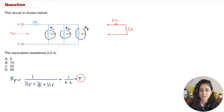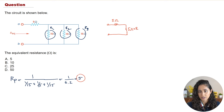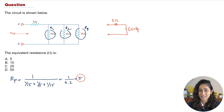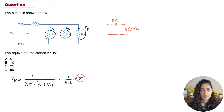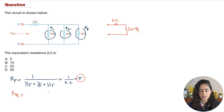What I did here is replace those three parallel resistors with a single equivalent resistor Rp, which we just solved for. Now as you can see, these two resistors are in series, and we'll apply the series equation.